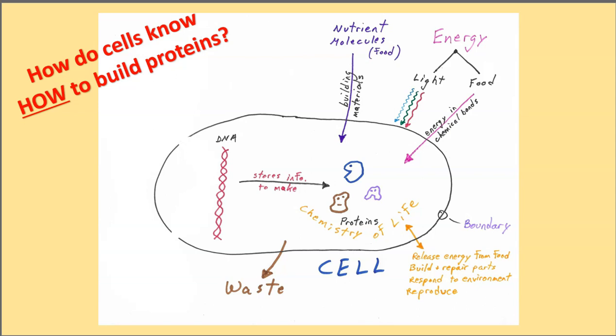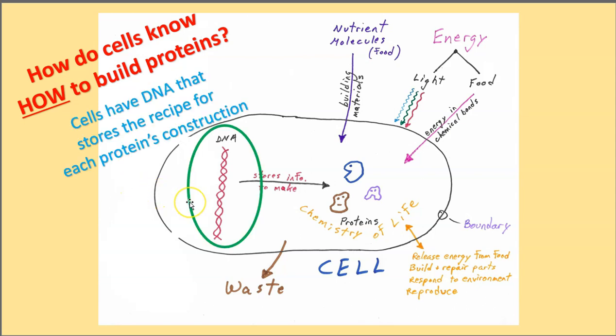How do cells know how to build proteins? And here the answer is DNA. Cells have DNA that stores the recipe for each protein's construction. So each of these three different proteins would have its own recipe stored in the DNA molecule.